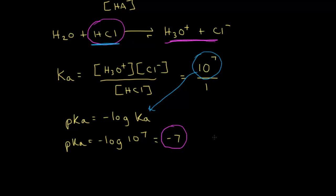Using pKa values, you get a range of approximately negative 10 to approximately 50, and all of the compounds you discuss are usually going to be in this range — it's just much easier to work with. Mathematically, the higher the Ka number, the lower the value you get for your pKa. That means the stronger the acid, the lower the pKa value. And conversely, the weaker the acid, the higher the pKa value.